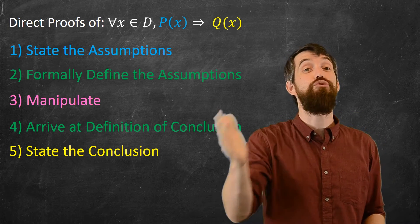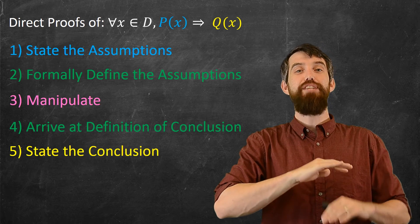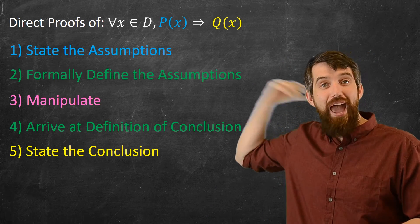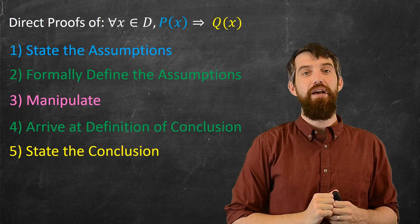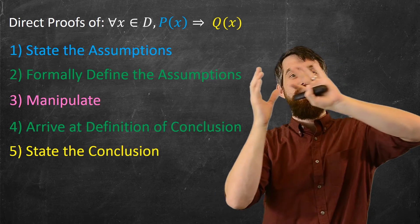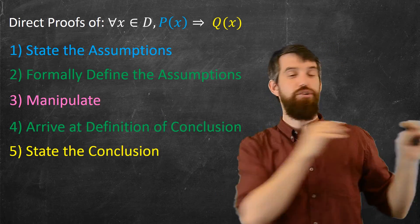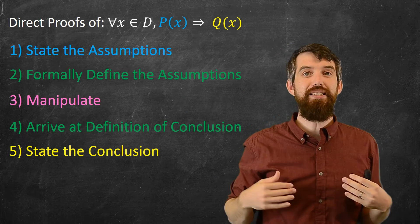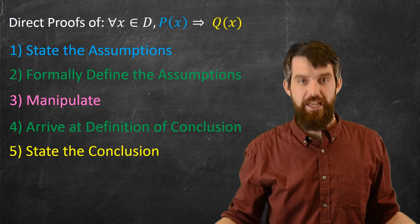Final point about this introduction to proofs. This is for so-called direct proofs. Proofs of the claim where you're saying for every value in some domain, you're saying the p of x's imply the q of x's. And you're starting with your assumption p, and you're going towards your conclusion q. This is a for-all style statement.